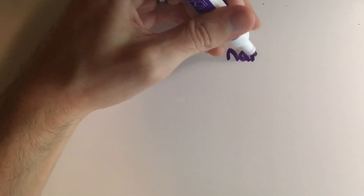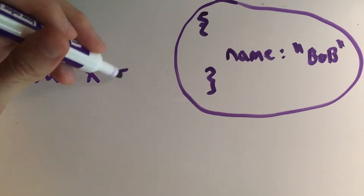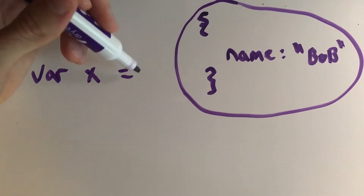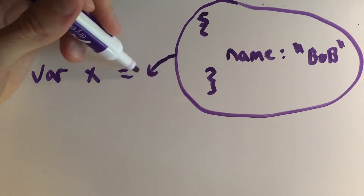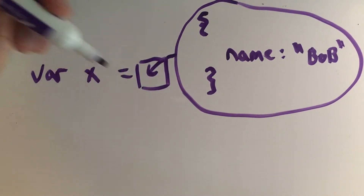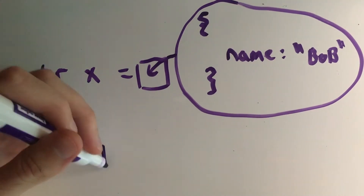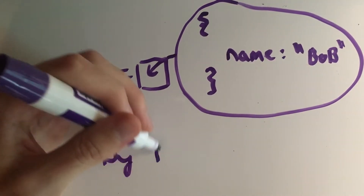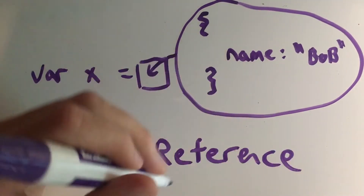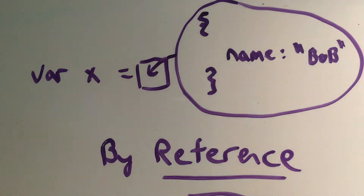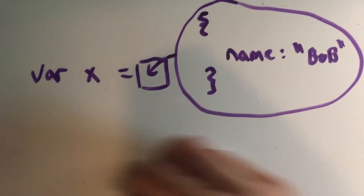Next we're going to go ahead and declare an object, which is denoted by curly braces in JavaScript, and we're going to give it the property name equal to 'Bob'. Unlike the primitives earlier, when you assign a variable equal to an object, it's going to be a reference that's stored inside of the empty box. So X's empty box holds a reference to the object with the property 'Bob' — it doesn't actually hold the value of that object but instead a reference.